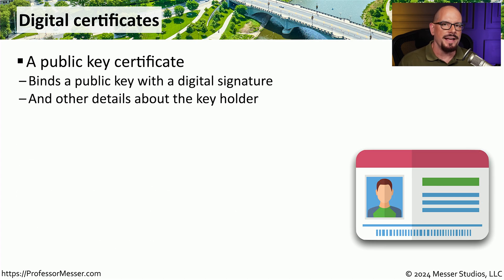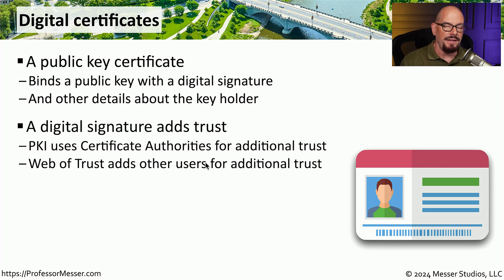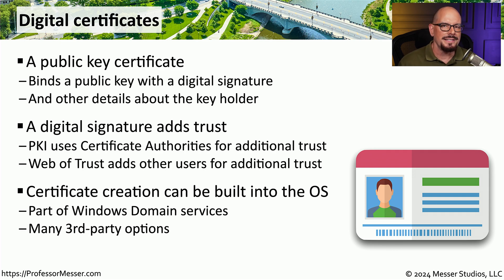One challenge that many organizations have is applying a level of trust towards a user or device. One way they can assign this trust is through the use of a digital certificate. Digital certificates are often digitally signed by a central certificate authority, and that's what adds the trust to these individual certificates deployed to users or devices. Instead of a centralized certificate authority, some organizations will use a more distributed form of trust called a web of trust. With a web of trust, if A trusts B and B trusts C, then A can also trust C. The process of creating certificates, a certificate authority, and providing digital signatures for those certificates is often built into central operating systems.